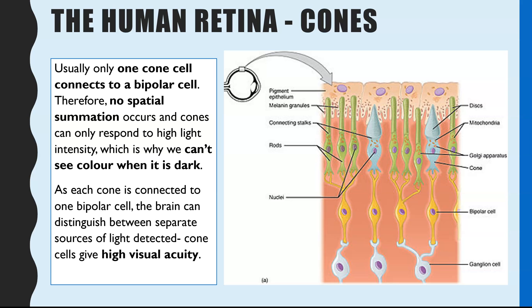Now the positive of this is because you only have one cone cell connecting to one bipolar cell, the brain can distinguish between separate sources of light. And therefore cone cells provide a high visual acuity, meaning you do have much sharper, clearer vision in color.